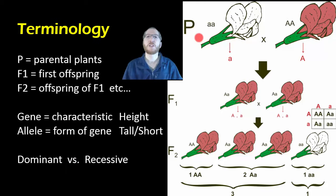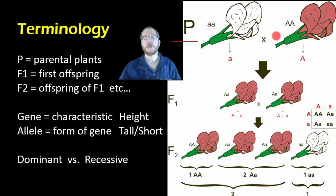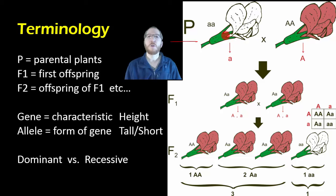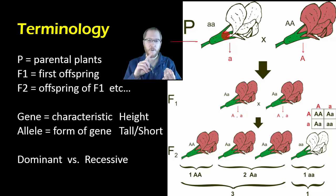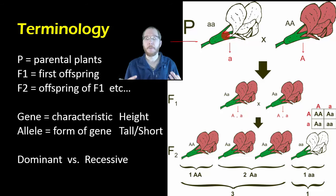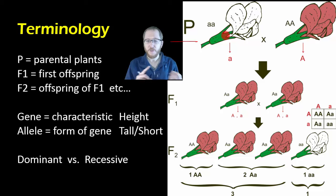Let's discuss some of the terms Mendel used that we still use today. First, when you start reproducing things, you have your parental generation — the P generation — the initial plants he had been breeding for a while. He would self-pollinate them, breeding them with themselves, to make sure all offspring were identical to the parent for that trait. He called these plants true breeding or pure breeding.